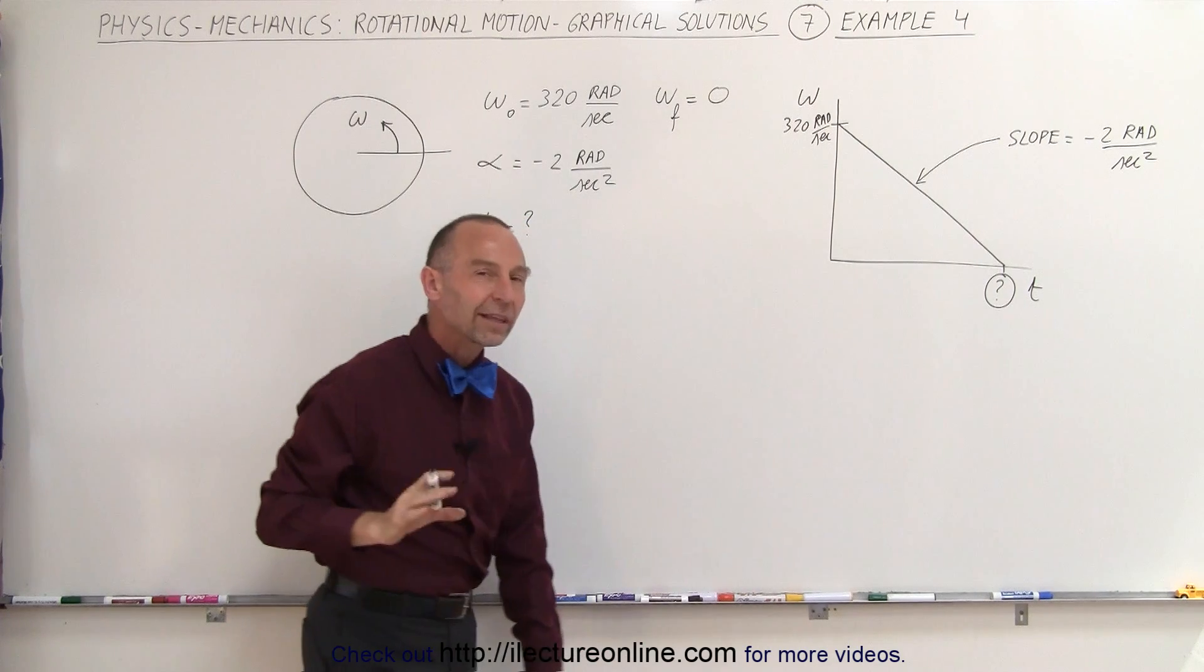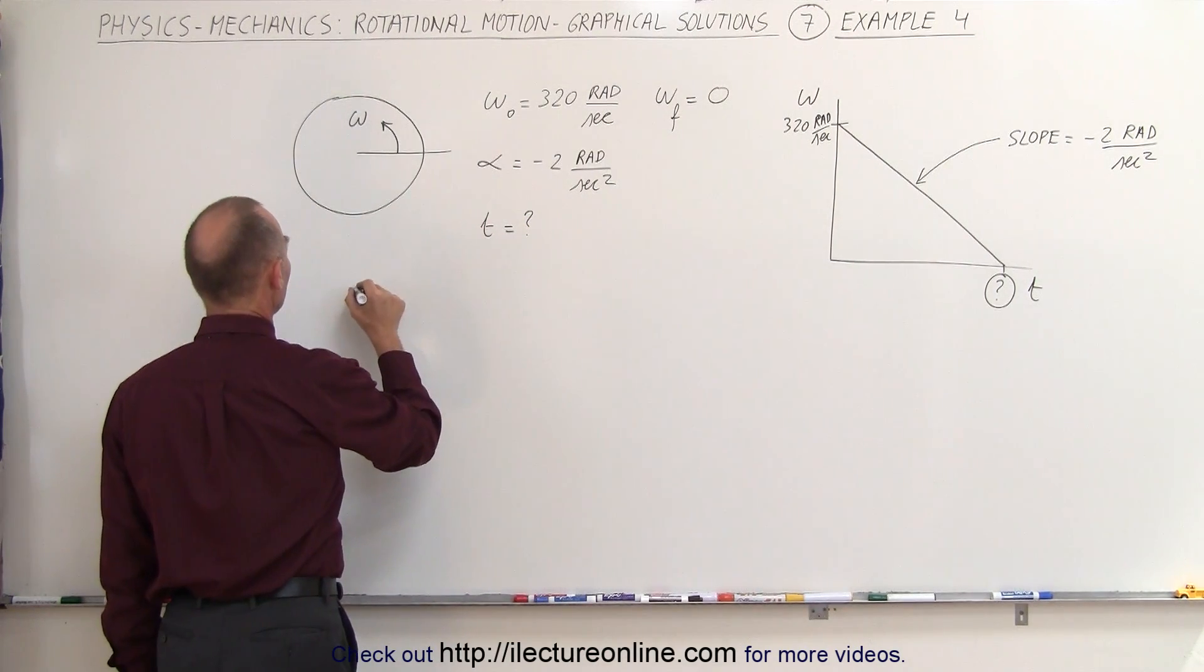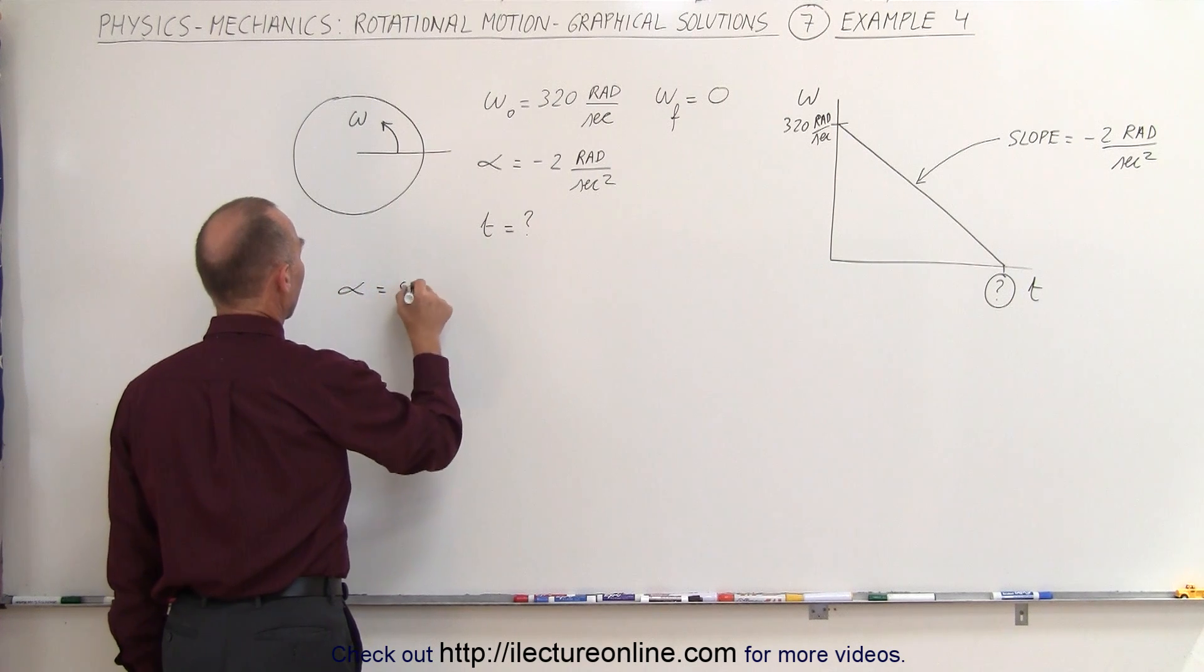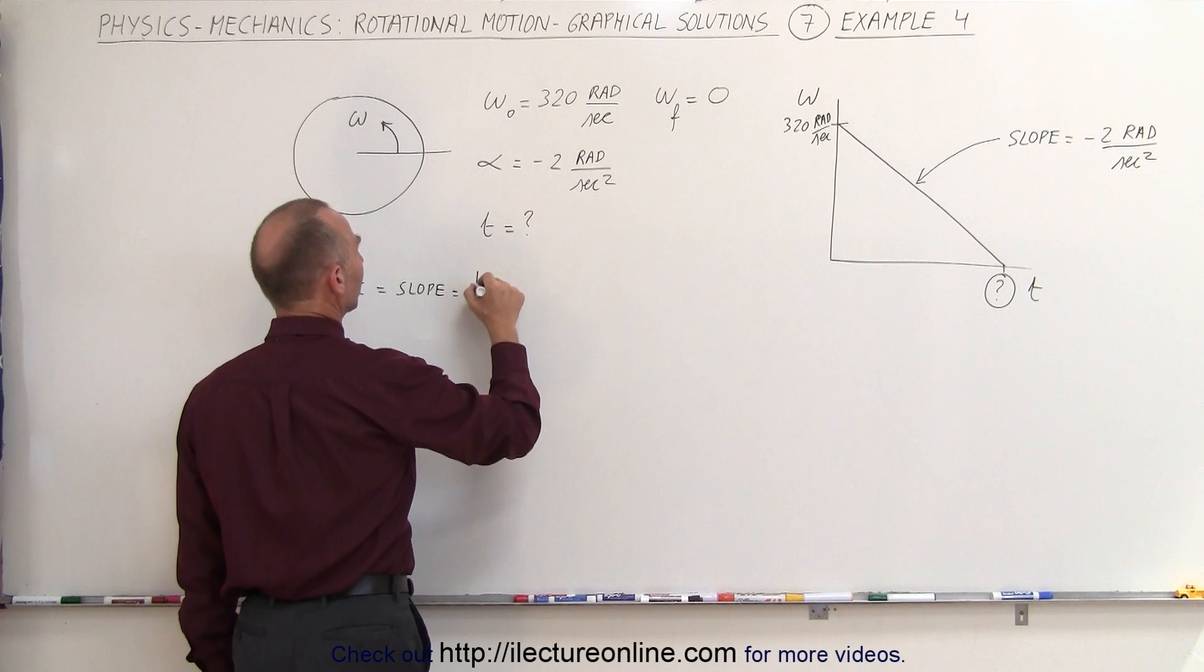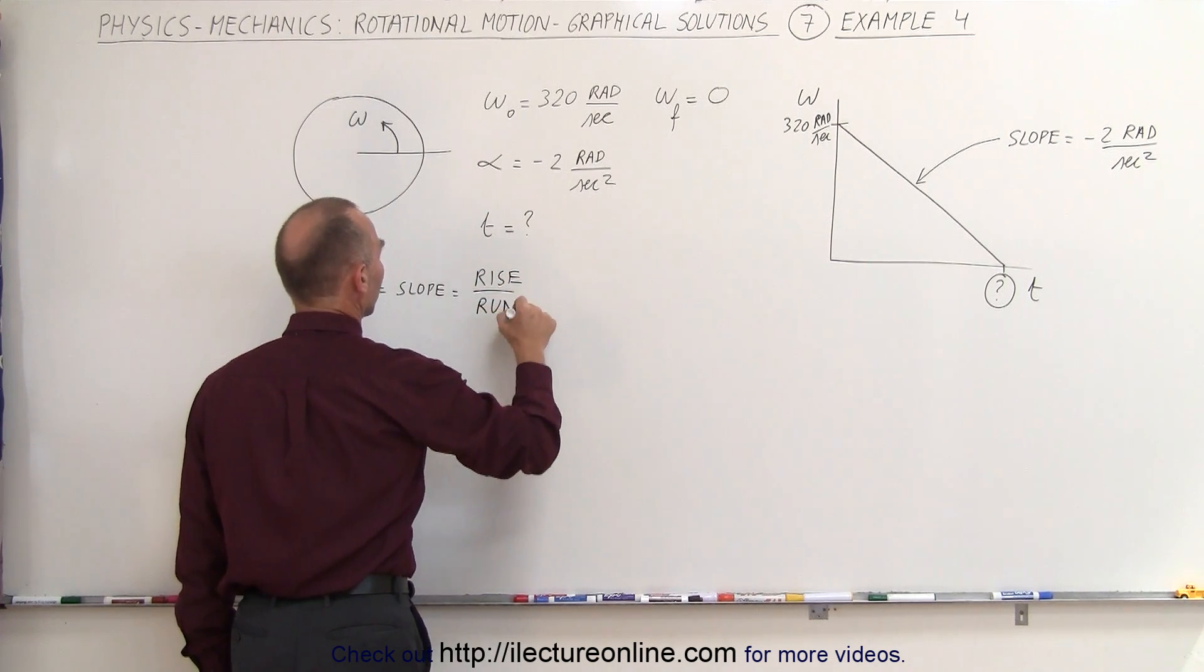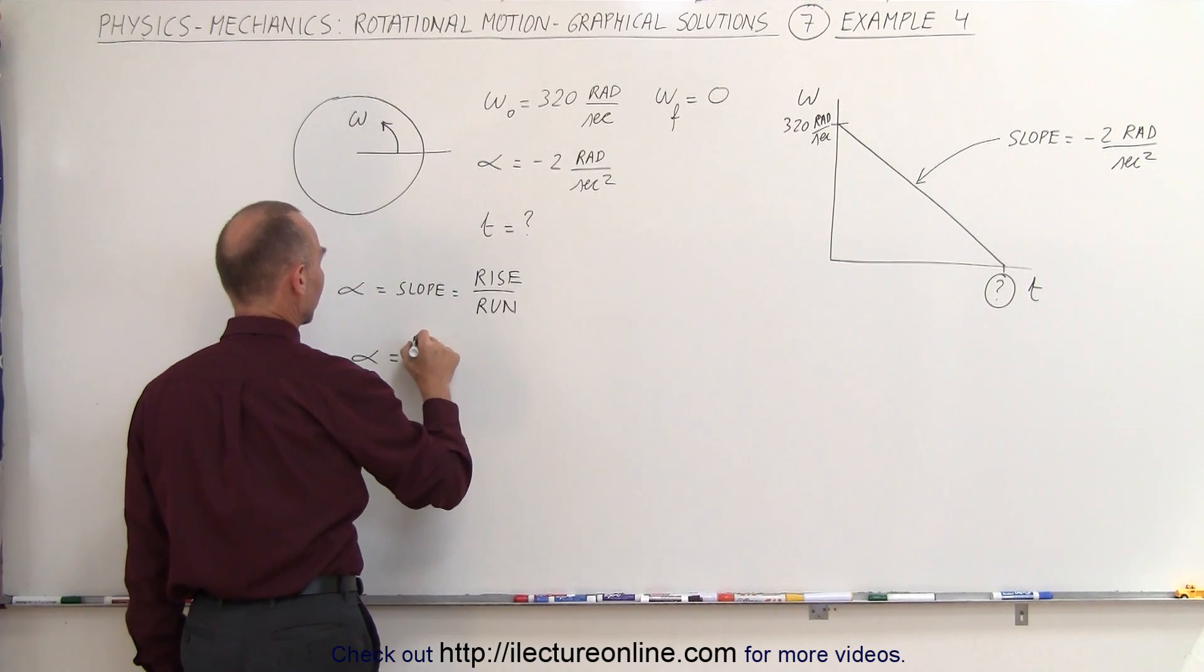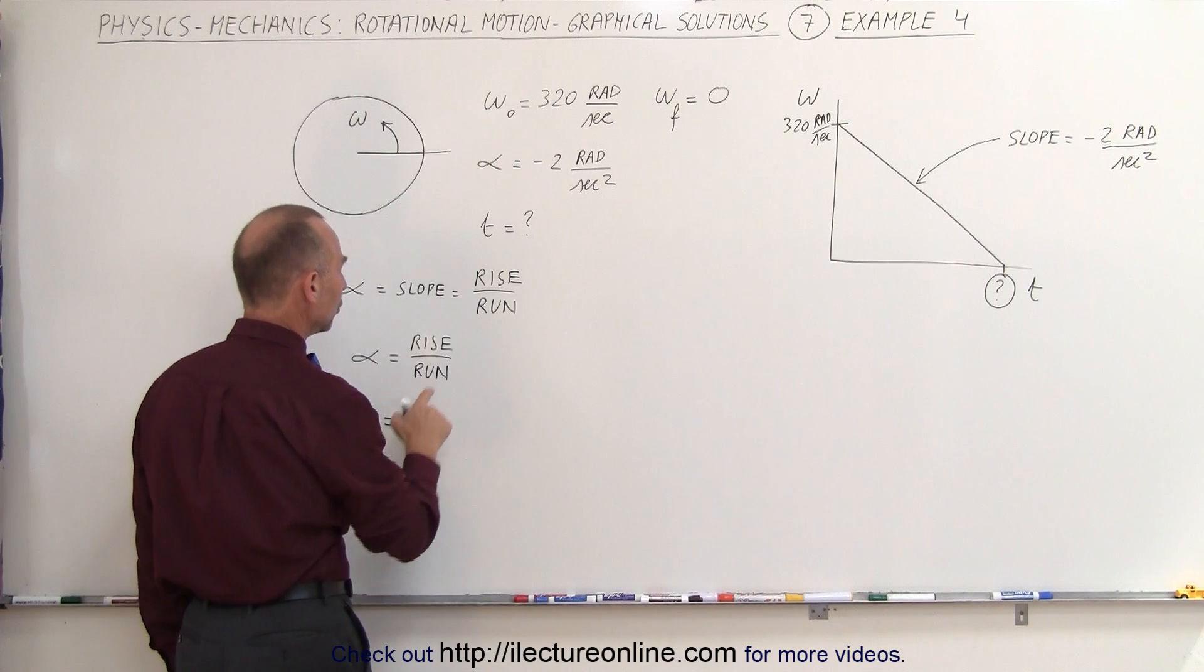So we're going to use that definition for the slope, that we know that the slope is equal to the angular acceleration, and the slope by definition is equal to the rise divided by the run. So we can say that alpha equals the rise divided by the run, and alpha is equal to...